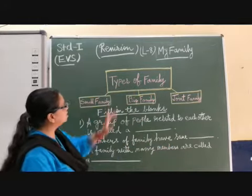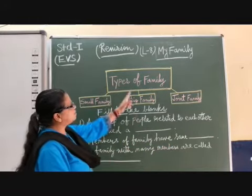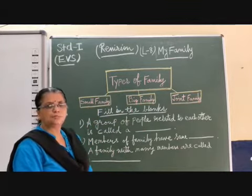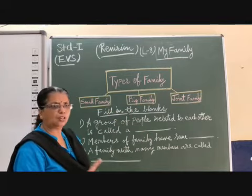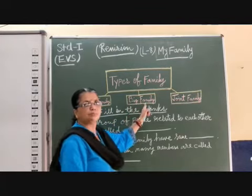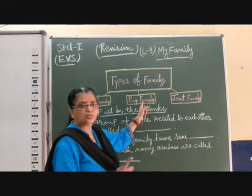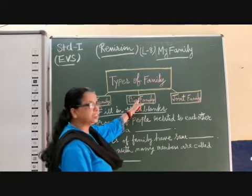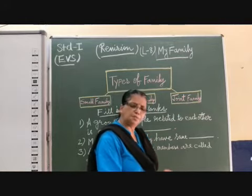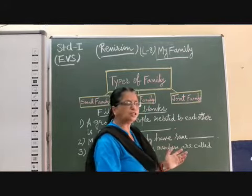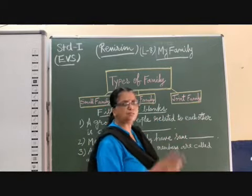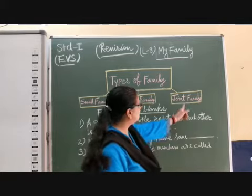So the same thing I have given here. Types of family — how many types? Three types. Small family: parents with one or two children, that is small family. Big family: parents with more than two children. And joint family: parents with maybe one or two children, but along with that grandparents, uncle, auntie, cousins also live together in the same house. That is joint family.